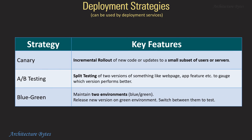Deployment strategies: Canary is an incremental or progressive rollout of new features or updates to a small subset of users or servers. A/B testing performs split testing of two versions of something — like a web page or app feature — to gauge which version performs better. Blue/Green maintains two environments, blue and green, and you can release a new version of your application on the green environment and switch traffic between environments to perform tests.